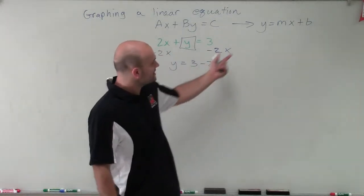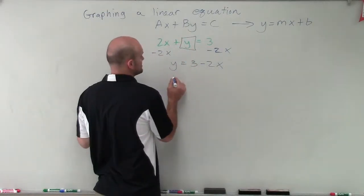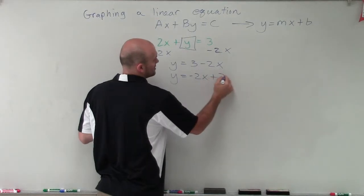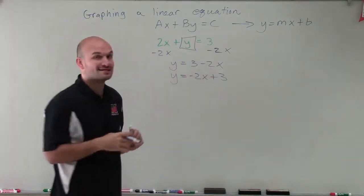However, to write this in this format, I want to rearrange this side of this expression so it's y equals negative 2x plus 3. And that's plus 3 because that 3 is positive.